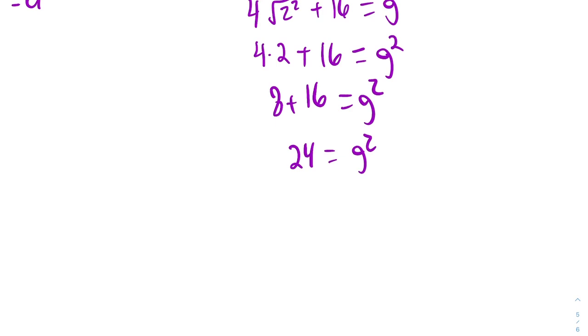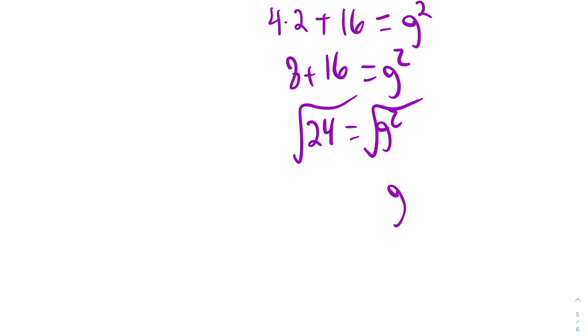To solve for G, we need not squared, we need regular G. So that means we need to square root both sides. The square root of 24 will be equal to G.